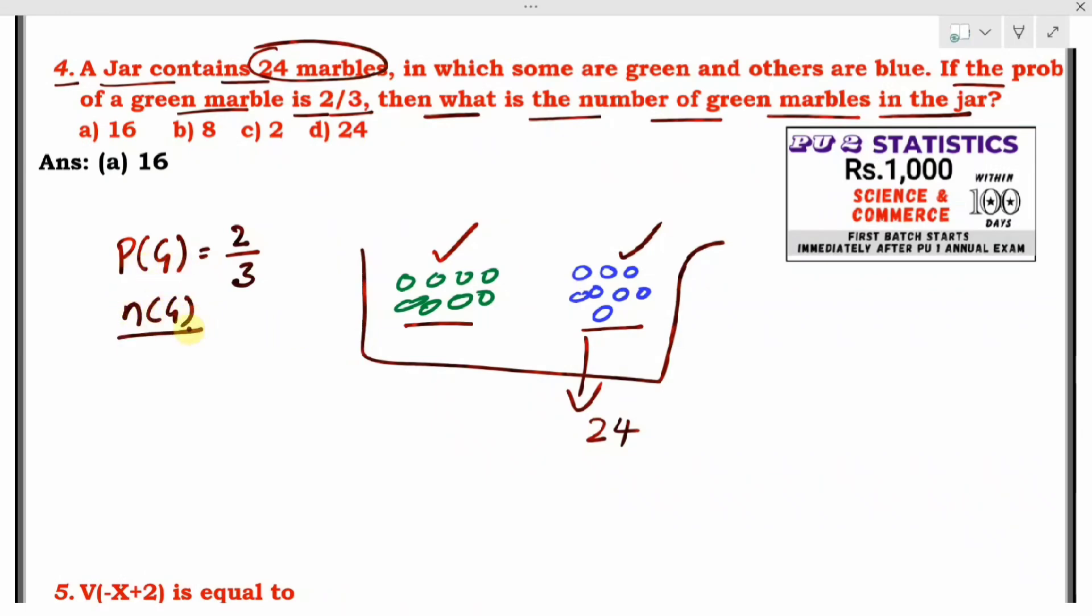Number of green balls divided by total number equals 2 divided by 3. Number of green balls we need to calculate, so we keep it as n(G). Divided by n(S), total number is given as 24 marbles, which equals 2 divided by 3.